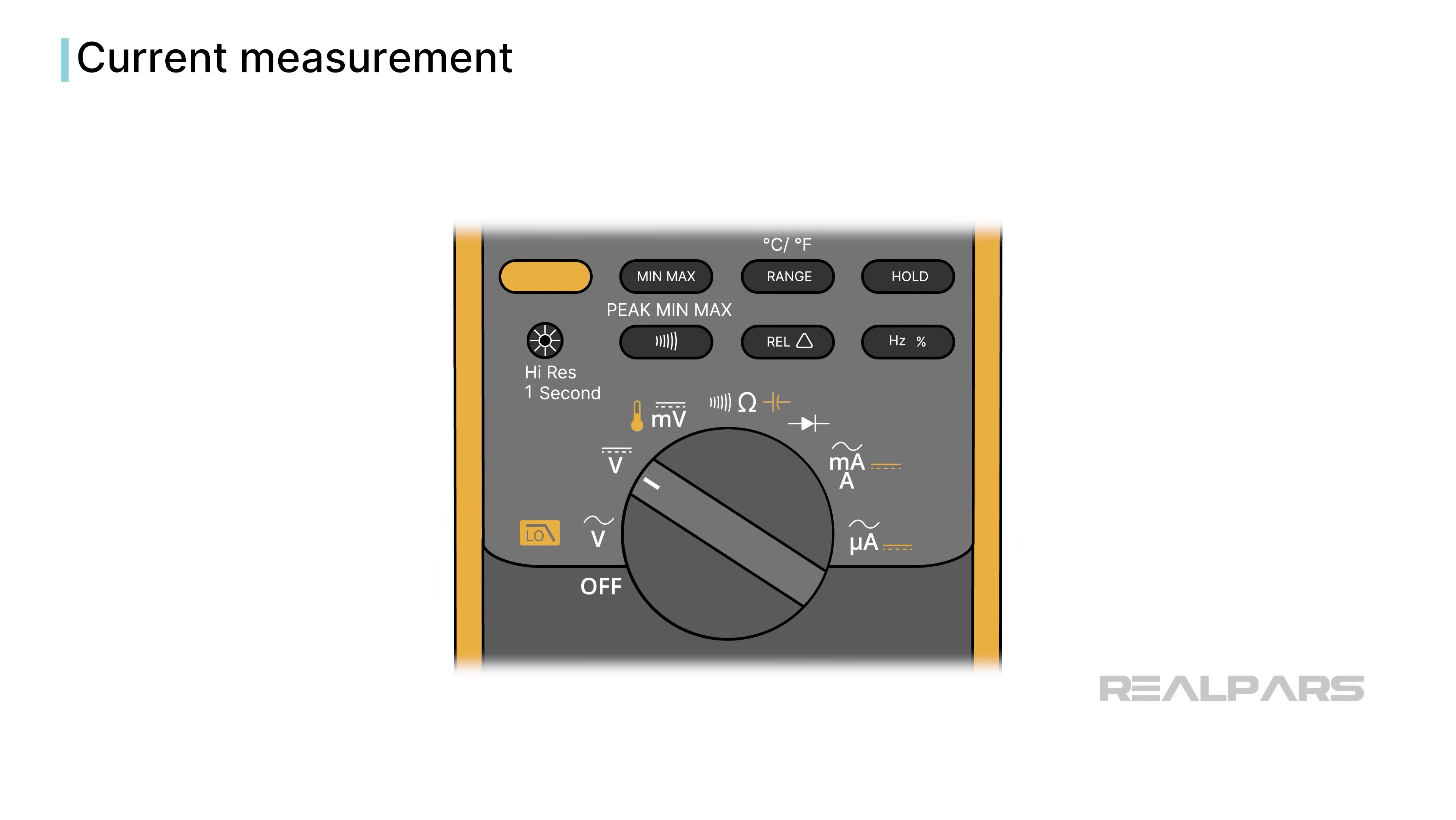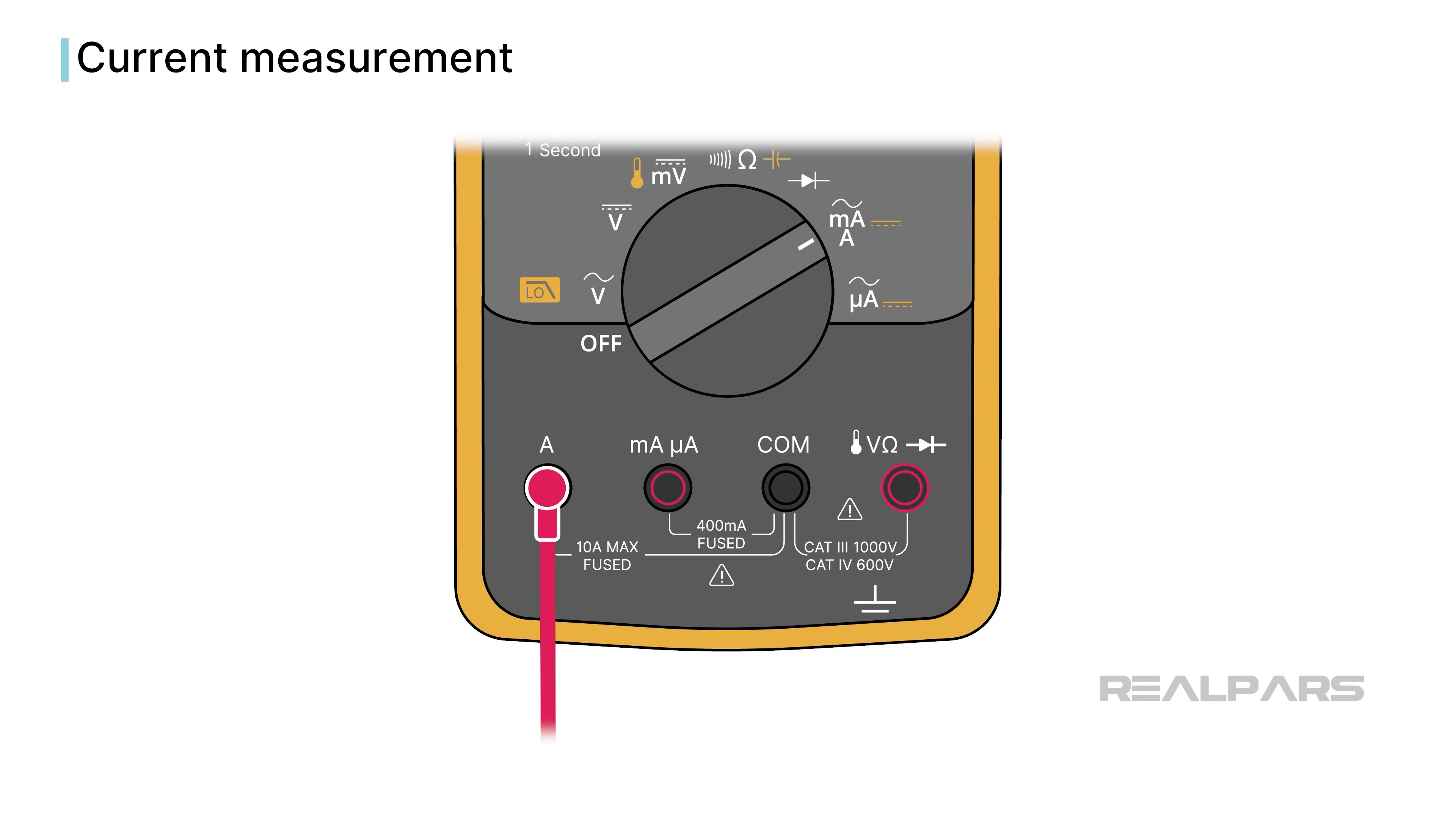All ammeters are fused for protection. The Fluke 87-5 can measure amps, milliamps, and microamps by placing the selector switch appropriately. On the Fluke 87-5, the red lead is plugged into the appropriate amp, milliamp, and microamp jack, and the black lead connects to the common jack. Note the fuse ratings printed under each red jack.